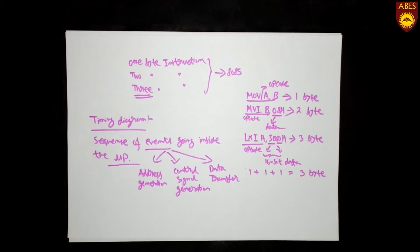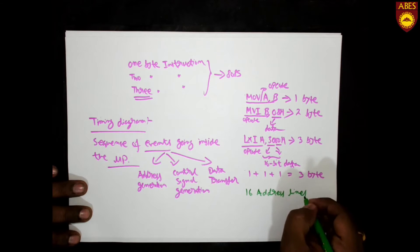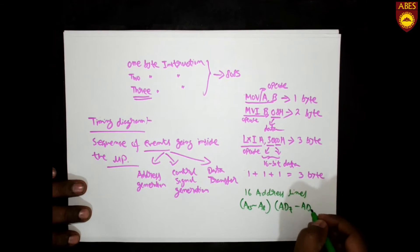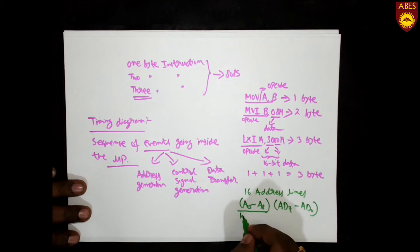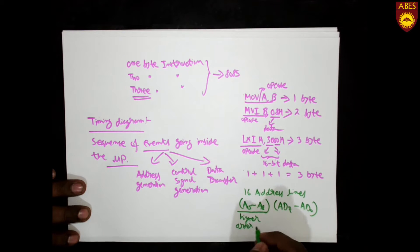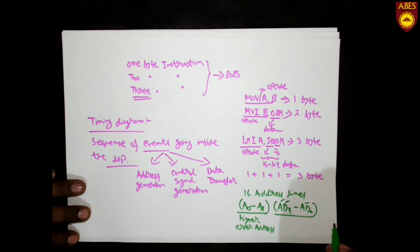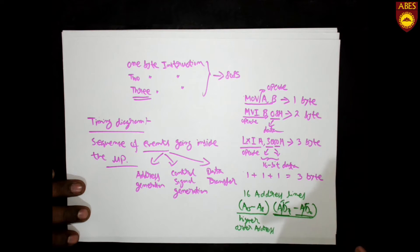As we know, the 8085 has 16 address lines: A15 to A8 as the higher order address, and AD7 to AD0 as the multiplexed address and data bus. So obviously the microprocessor needs to generate a control signal to demultiplex the address bus and data bus — to determine at what timing this line works as the address bus and at what time it works as the data bus. I want to demonstrate this with the help of a timing diagram.